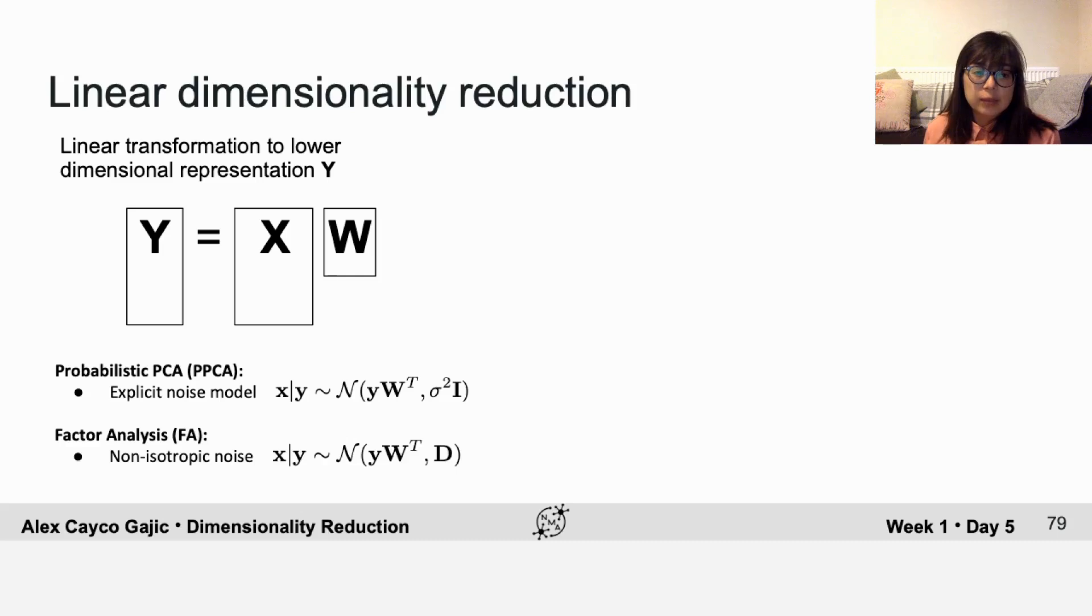Another example is factor analysis, which is similar to PPCA, but it allows the variance to be different in different directions.